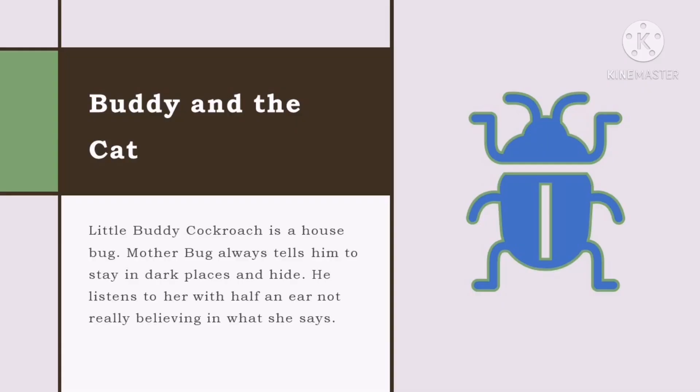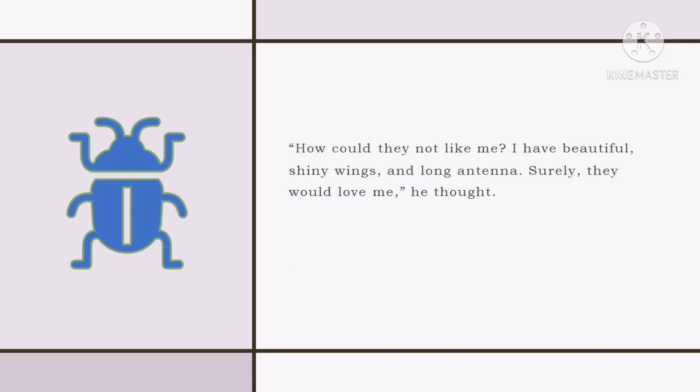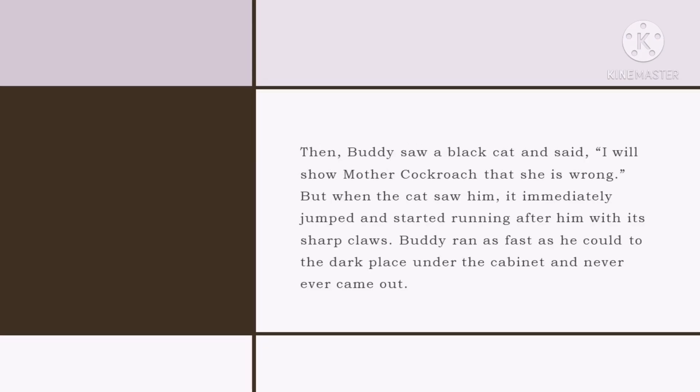Little Buddy Cockroach is a house bug. Mother Bug always tells him to stay in dark places and hide. He listens to her with half an ear, not really believing in what she says. 'How could they not like me? I have beautiful shiny wings and long antennae — surely they would love me,' he thought.